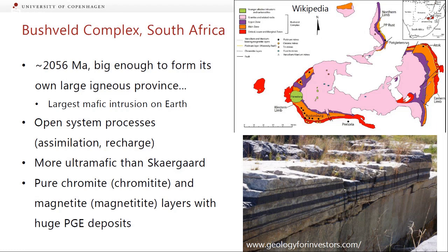It's a good example of open system processes, and the ones we'll focus on are assimilation and recharge. The starting magma was a lot more ultramafic than Skaergaard, and because we have recharge we actually see repeated ultramafic cumulates in the sequence. It also has interesting rock types: chromitites, which are pure chromite layers, and magnetitites, which are pure magnetite layers. The chromitites in particular have huge PGE deposits — 80% of the world's platinum group elements come from this intrusion, used for platinum jewelry, catalytic converters, and high-tech applications.